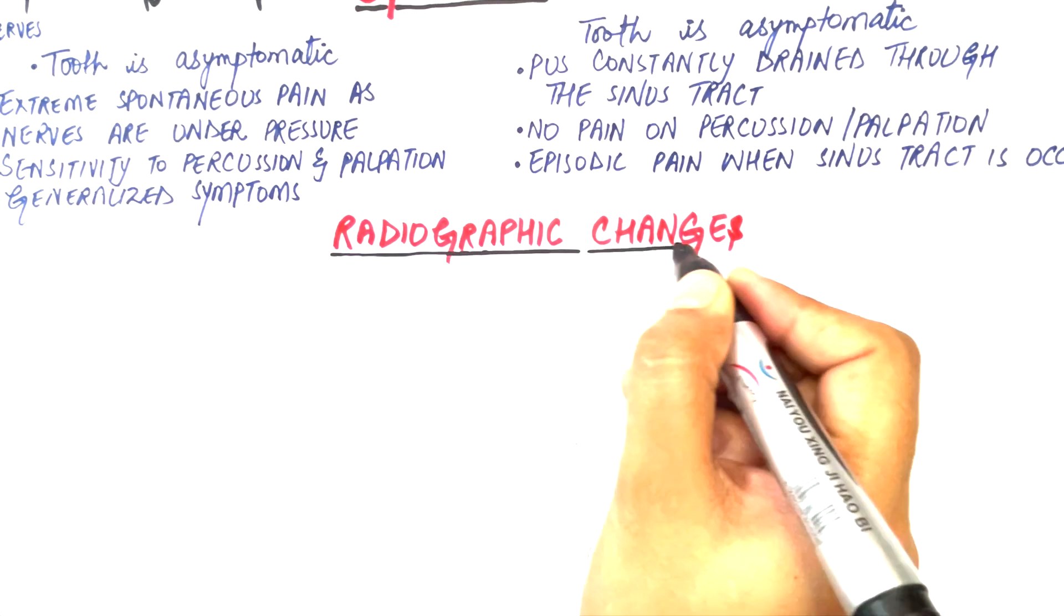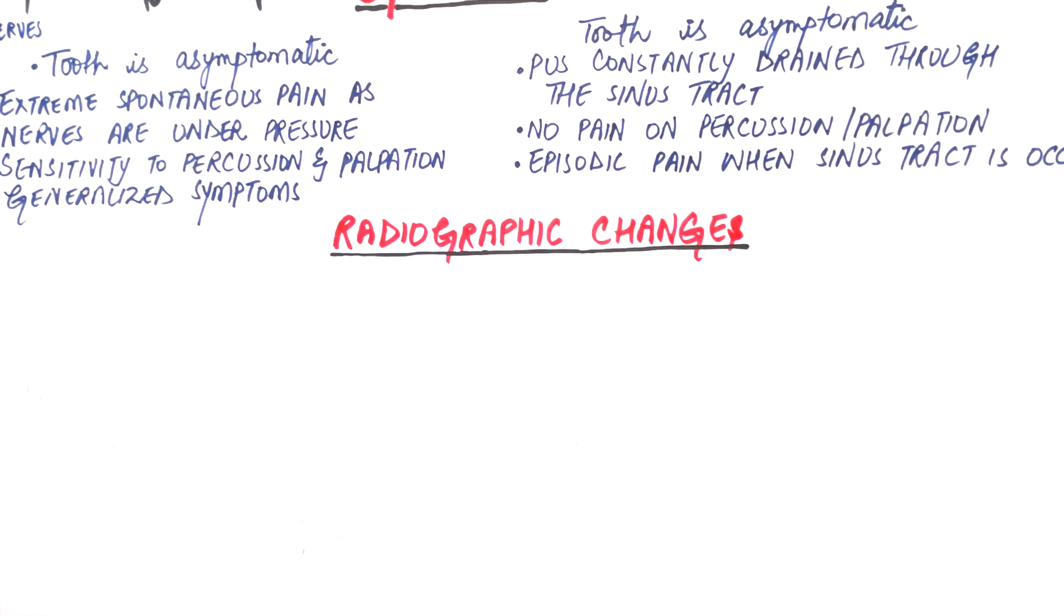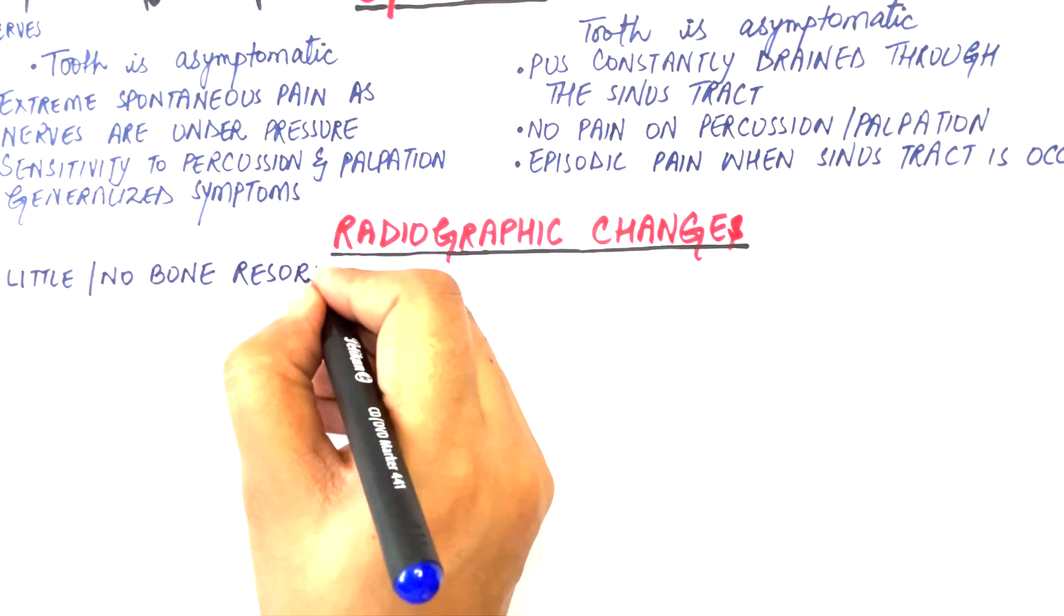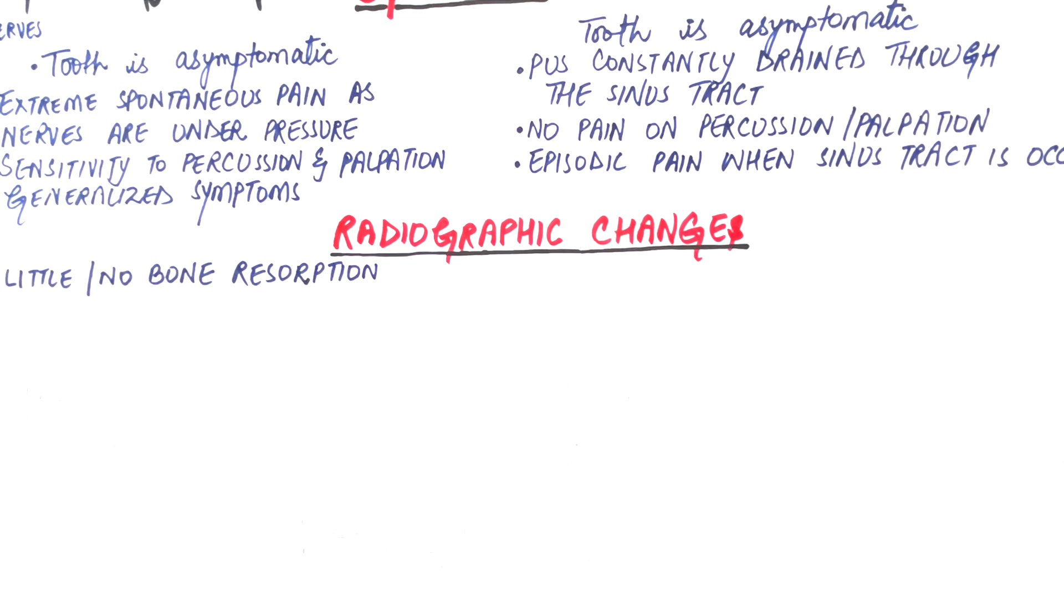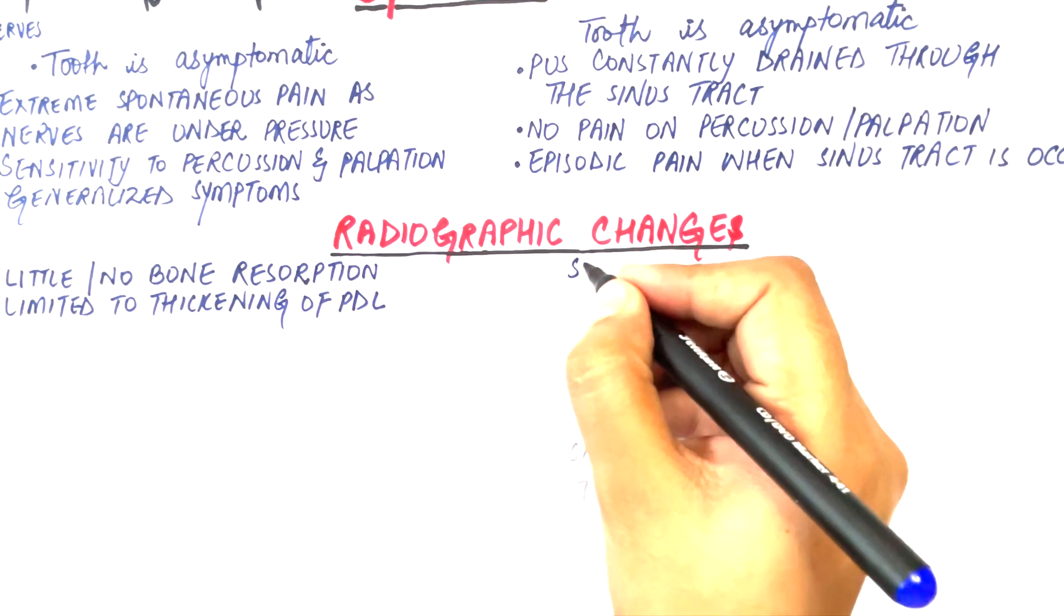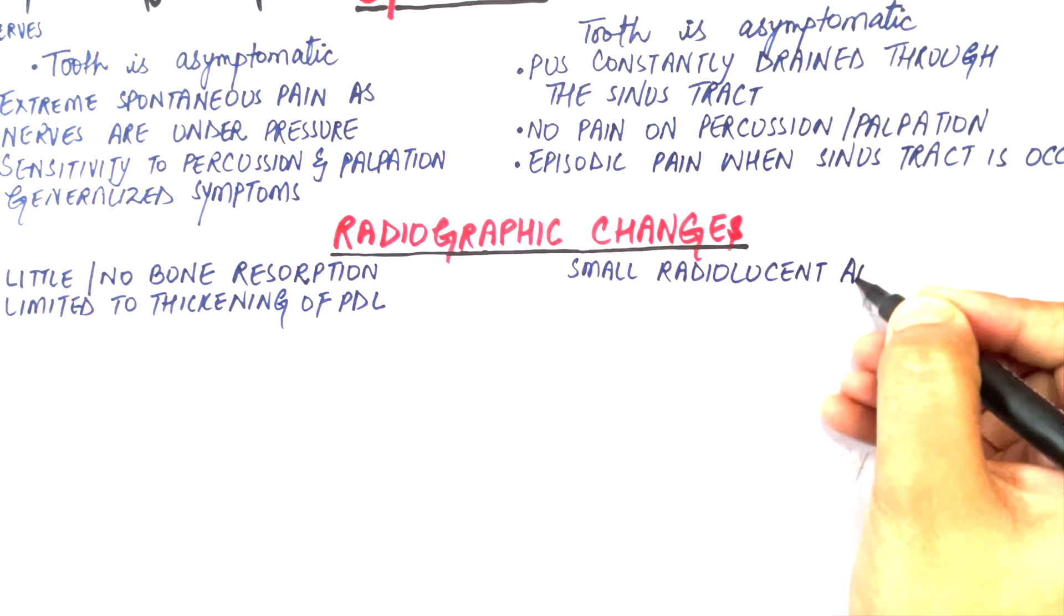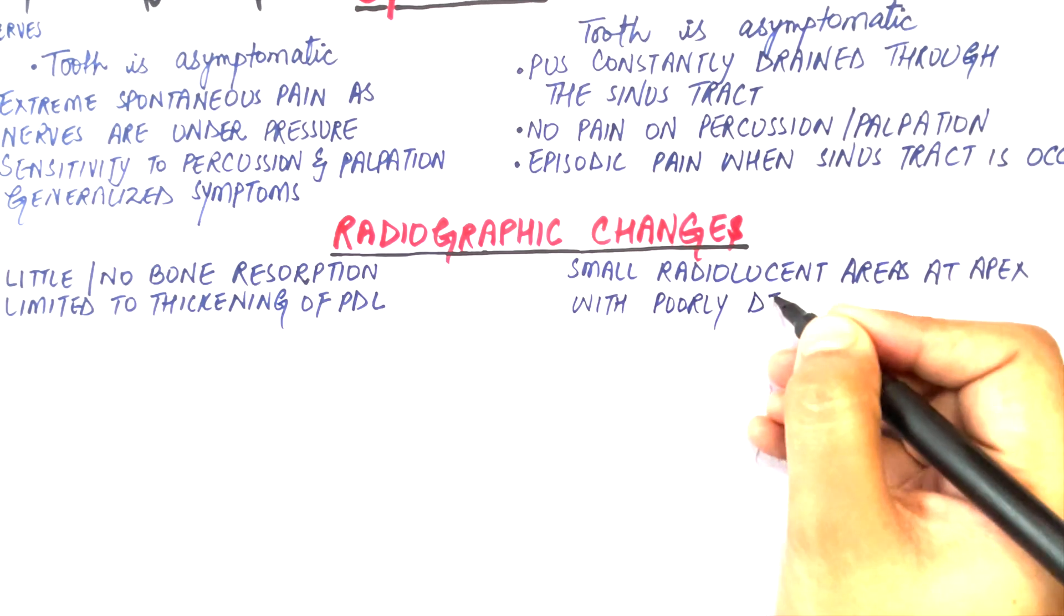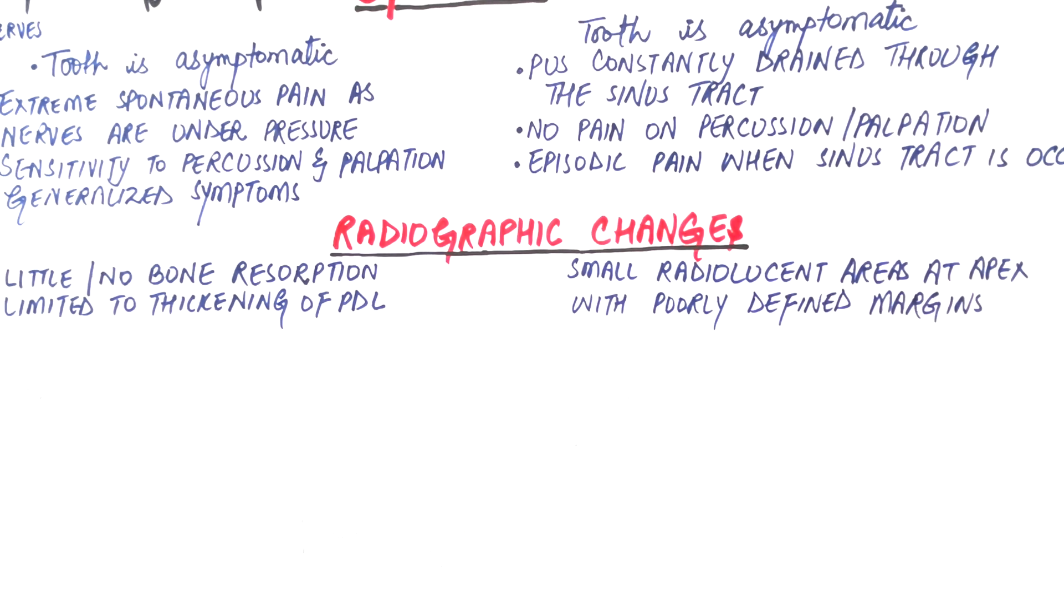The acute periapical abscess, since it develops rapidly, shows little or no bone resorption radiographically. The initial radiographic change is limited to the thickening of the periapical space around the tooth apex. However, in chronic periapical abscess, small radiolucent areas at the root apex with poorly defined margins can be observed.